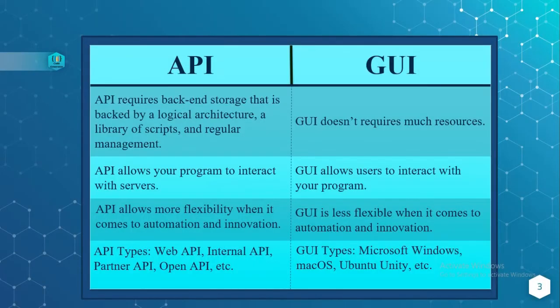Next difference: API requires back-end storage that is backed by the logical architecture, a library of scripts and regular management. Whereas GUI, that is Graphical User Interface, does not require much resources when compared to API.